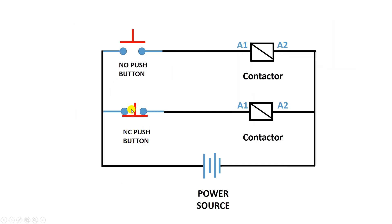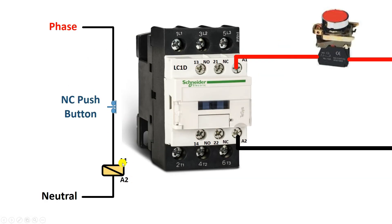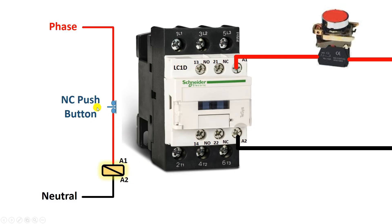Here an NC push button is connected with the contactor. What happens when this push button is connected — let's understand. I connected the NC push button in series with the contactor. In this condition, if you do not press this push button, the NC push button lets the power supply always flow, so the contactor remains on. But when you press this push button, the circuit will break, and due to the break in the circuit your contactor turns off. As long as you press this push button, the contactor is in off condition. On releasing it, the contactor will again turn on, because power supply from here is now going to this contactor.